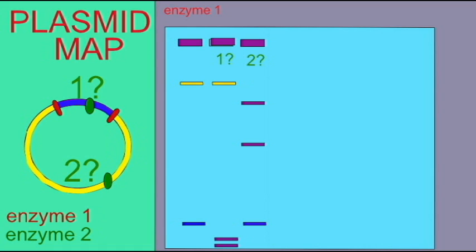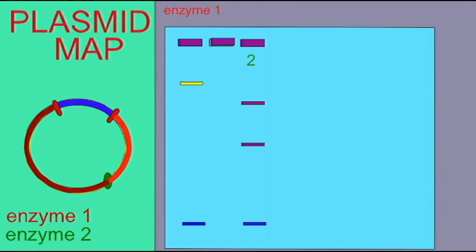So let's say that the second of the two options is supported by the data, then we would conclude that our second enzyme had a restriction site within the yellow band and that it was not perfectly in the middle, and so it created a larger piece and a smaller piece.